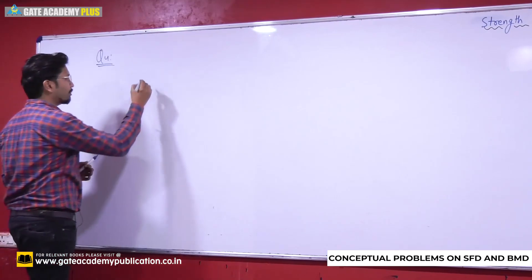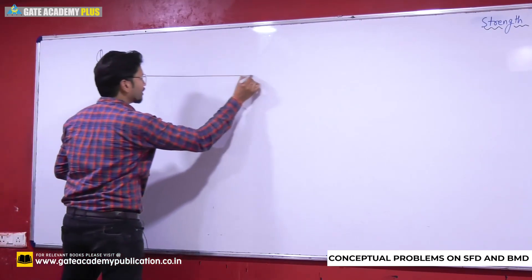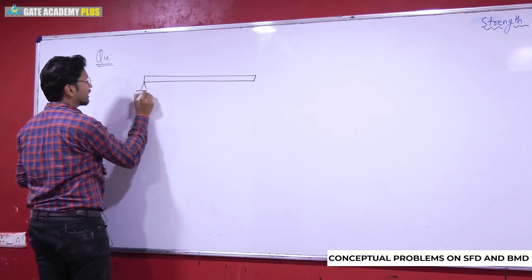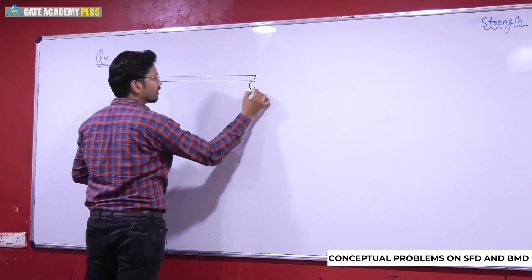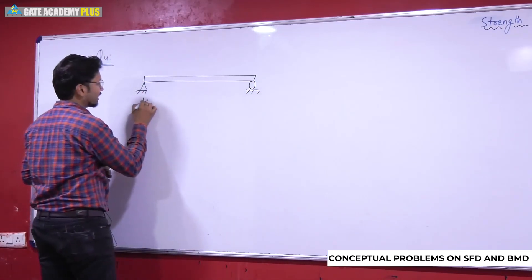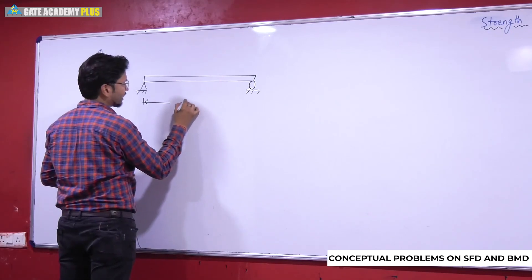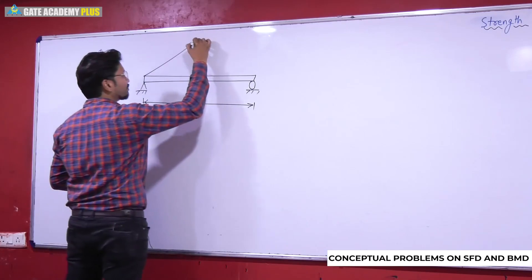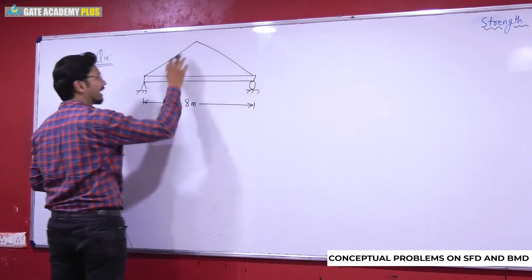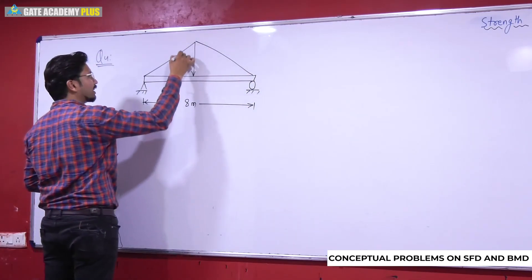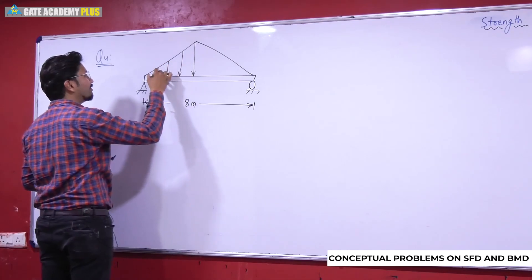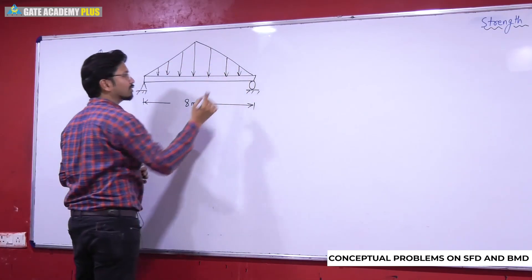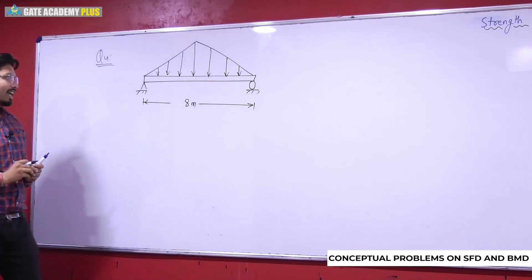First question देखते हैं। यहाँ पर आपके सामने एक simply supported beam दे रहा हूँ — this is the hinge support and this is the roller support. इसकी length 8 meters है। इसमें triangular load लग रहा है जो basically एक uniformly varying load है लेकिन यह triangle का shape दे रहा है, इसको triangular load भी बोलते हैं।